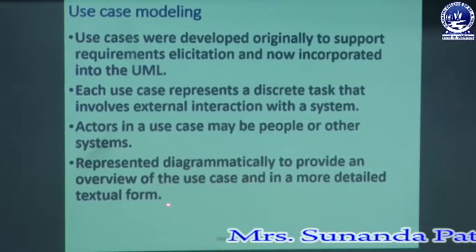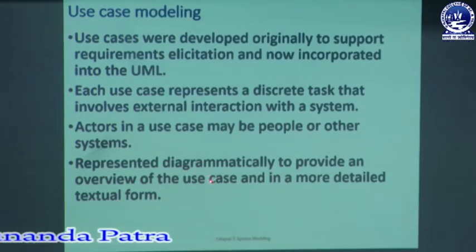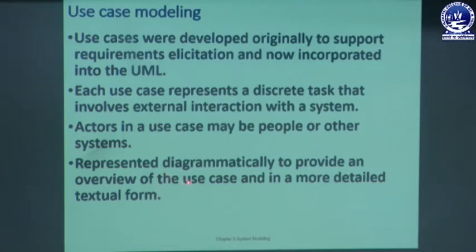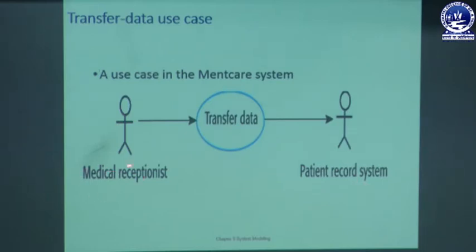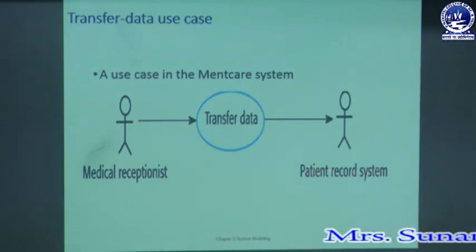A use case model can be represented diagrammatically to provide an overview, and also in a more detailed textual or tabular form that gives more detail about the diagram. Let's look at a transfer data use case. In the main care system, we transfer the patient record from the medical receptionist to the patient record system. The medical receptionist is responsible for transferring data from its record to the virtual record — the patient record system. The actor is the medical receptionist and another actor is the patient record system.